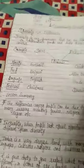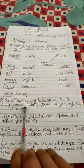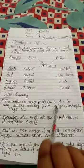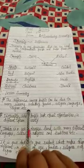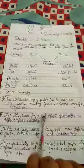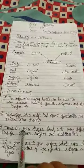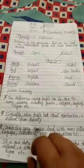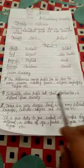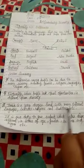From this lesson we learnt that the differences among people can be due to many reasons including gender, religion, language, region etc. Inequality where people lack equal opportunity is different from diversity. India is a very diverse, different land with many different languages, cultures, religions and traditions etc.